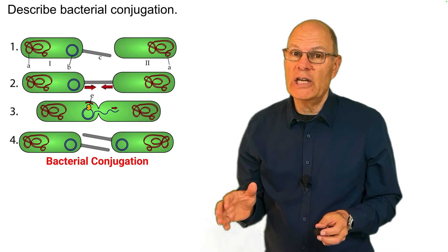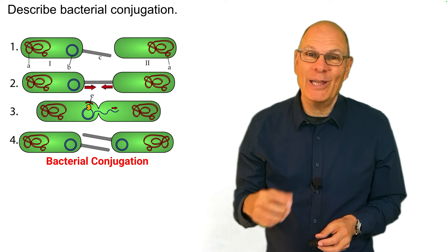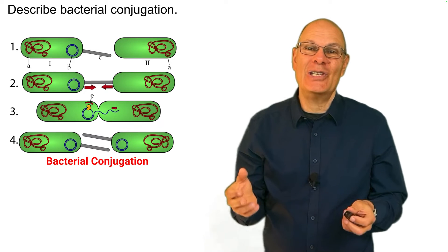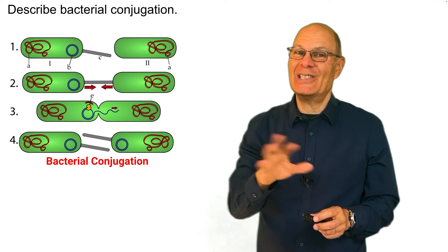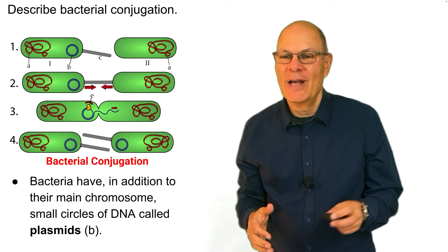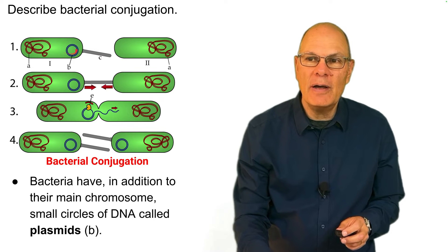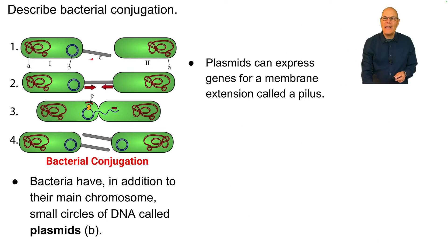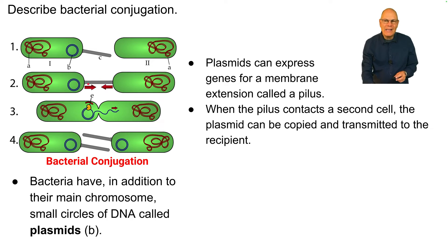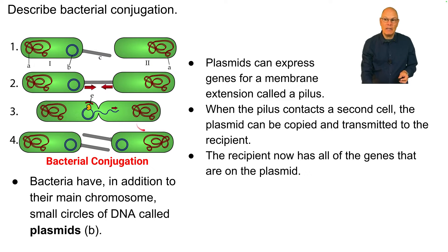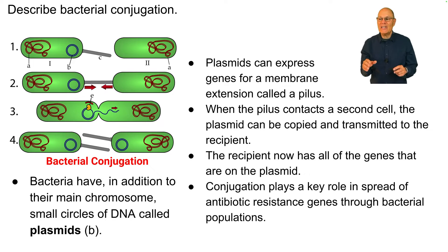Describe bacterial conjugation. Conjugation is another word for sex. Bacteria have, in addition to their main chromosome, a loop of DNA called a plasmid. Plasmids can express genes for a membrane extension called a pilus. When the pilus contacts a second cell, the plasmid can be copied and transmitted to that recipient, and the recipient now has all of the genes on the plasmid — horizontal gene transfer. Conjugation plays a key role in the spread of antibiotic-resistant genes through bacterial populations.